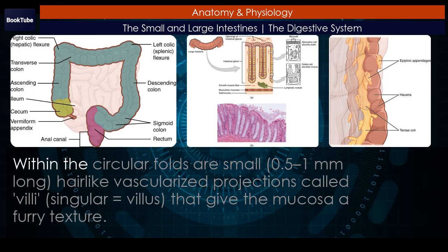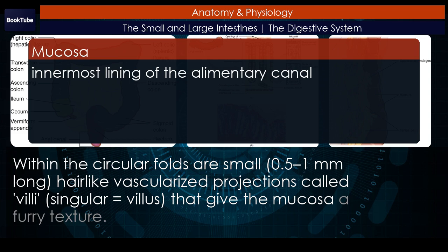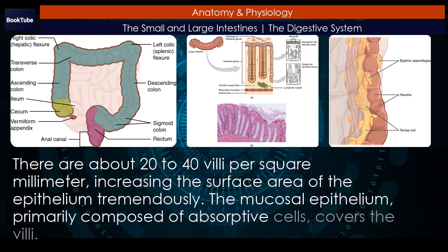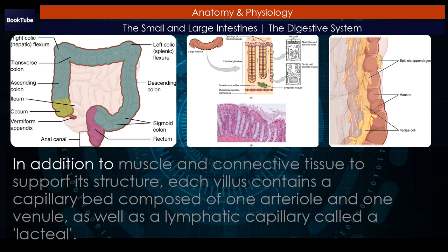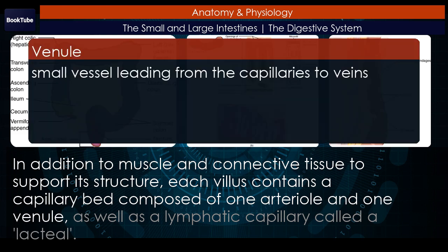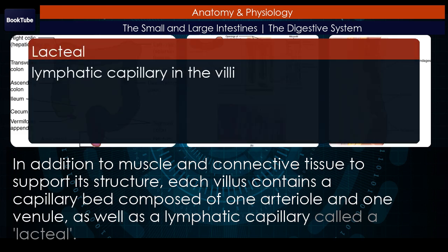Villi. Within the circular folds are small, 0.5 to 1 mm long, hair-like vascularized projections called villi (singular: villus), that give the mucosa a furry texture. There are about 20 to 40 villi per square millimeter, increasing the surface area of the epithelium tremendously. The mucosal epithelium, primarily composed of absorptive cells, covers the villi. Each villus contains a capillary bed composed of one arteriole and one venule, as well as a lymphatic capillary called a lacteal.